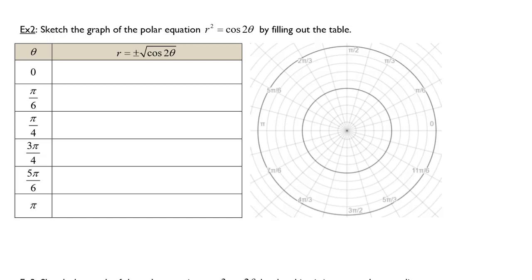Because of this, we are going to have two solutions for each angle we substitute in. When we substitute 0 into our equation, we'll have r equals plus or minus the square root of cosine of 2 times 0, which is equal to plus or minus 1.